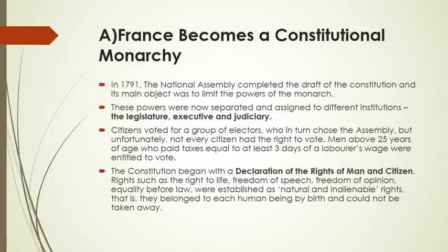Friends, children, in my previous lecture I have explained how there was an outbreak of revolution in France. As a result, the king understood that he cannot be in power for long, so he diverted and agreed for constitutional monarchy.